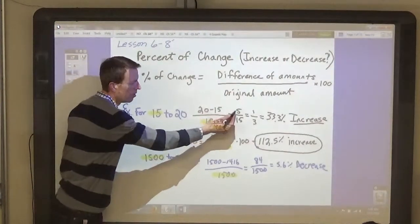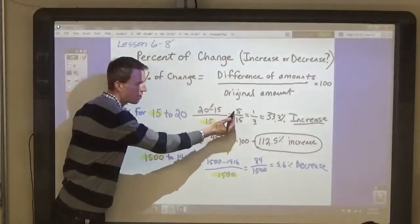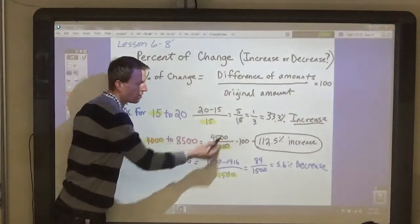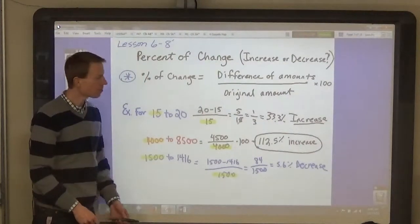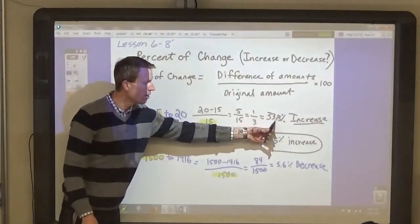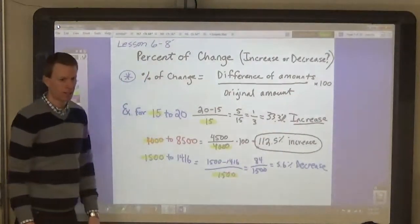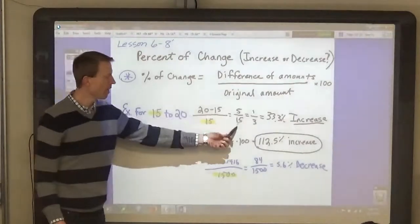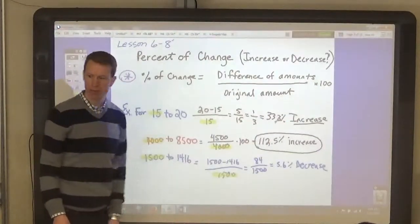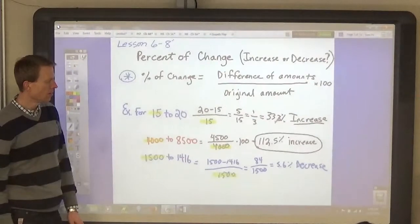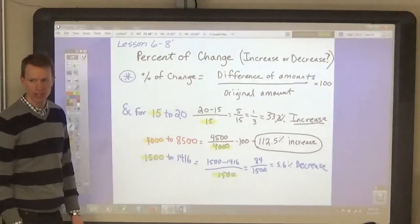And so you use 5, the difference, divided by the original amount, 15. 5 divided by 15 is 33.3%. And then you have to tell whether it's an increase or a decrease.